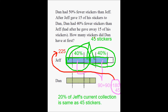Now the question wants us to find how many stickers Dan had at first. Dan had half of Jeff's original stickers. If Jeff has 225 stickers now, he gave 15 away, so he must have had 225 plus 15 — he must have had 240 stickers originally. If Jeff had 240 stickers, the original rectangle for Dan was half of that. Half of 240 is 120. So Dan originally had 120 stickers. That's my final answer.